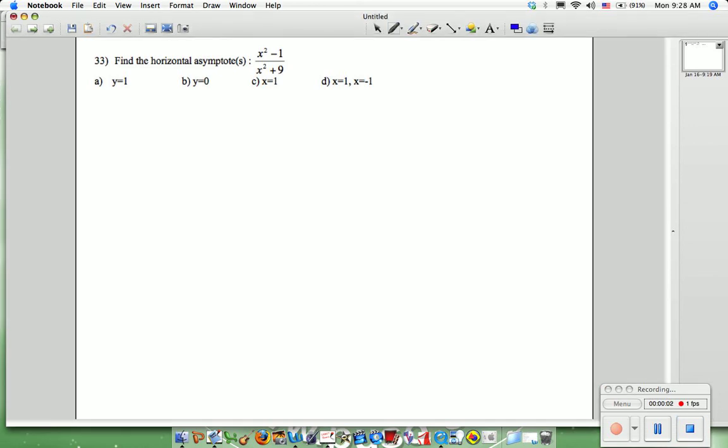Question 33 says find the horizontal asymptote. Do you know what asymptote? Horizontal asymptote? The one we just did, these lines here are called the what? Vertical asymptote. But this time we don't look for vertical. What are we looking for? Horizontal. The horizontal asymptote.